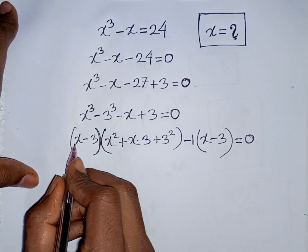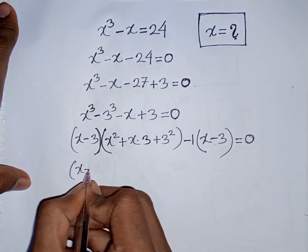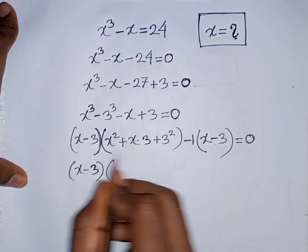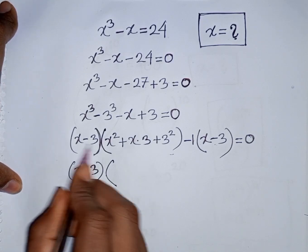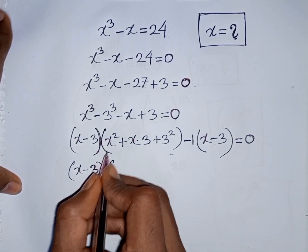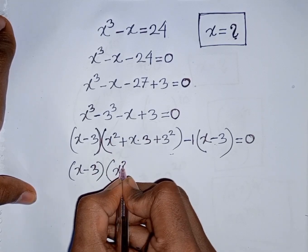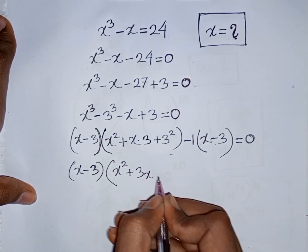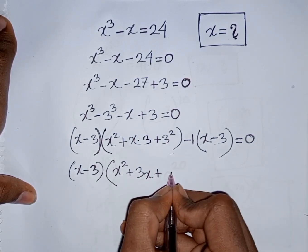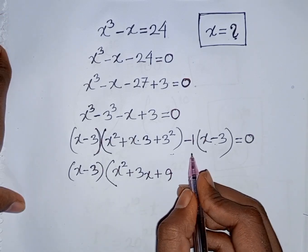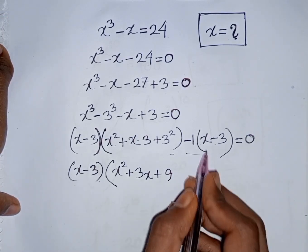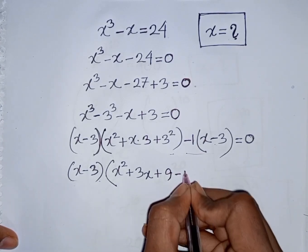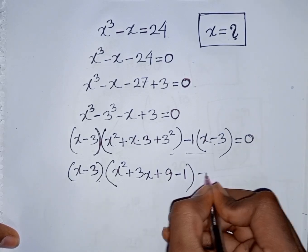Now we take out the common factor x minus 3. So x minus 3 is factored out, and x minus 3 cancels. We have x² plus 3x from the first group. Then x minus 3 cancels again, giving us minus 1 from the second group. So the bracket closes equal to 0, giving (x minus 3)(x² + 3x + 8) = 0.